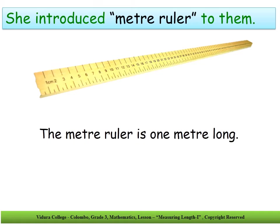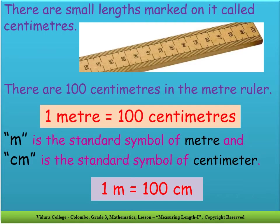Can you see the meter ruler? The meter ruler is one meter long. If you observe the meter ruler properly, you will see that there are small lengths marked on it. They are called centimeters. There are one hundred centimeters in the meter ruler. One meter equals one hundred centimeters. The standard symbol of meter is M, and the standard symbol of centimeter is CM.